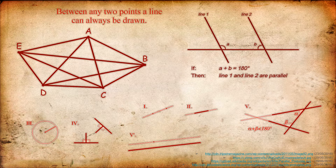Euclid was influential in his work for the way he explained geometry and logic, as well as his demand for proof of every theorem, so much so that the foundations he laid in the field of geometry allowed later mathematicians to use and develop these axioms.